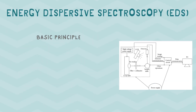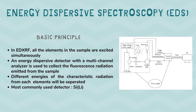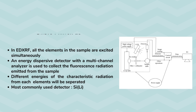In EDS, an energy dispersive detector with a multi-channel analyzer is used to collect the fluorescence radiation emitted from the sample. Different energies of the characteristic radiation from each element will be separated.